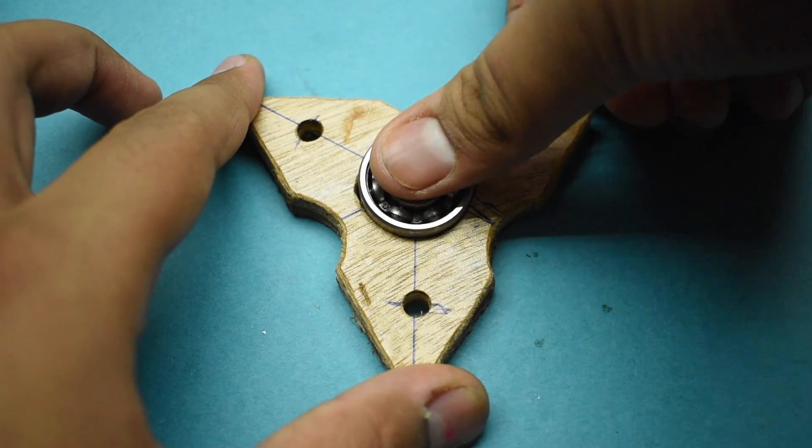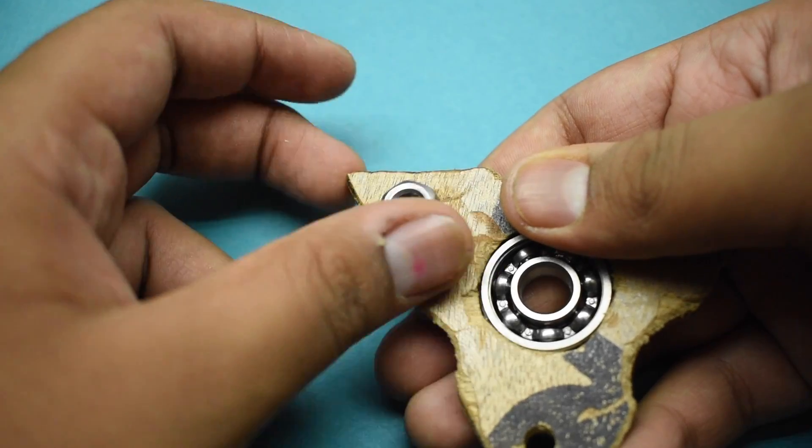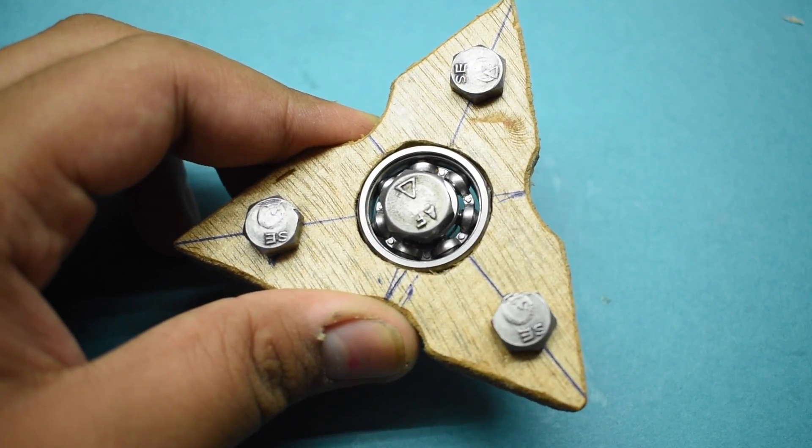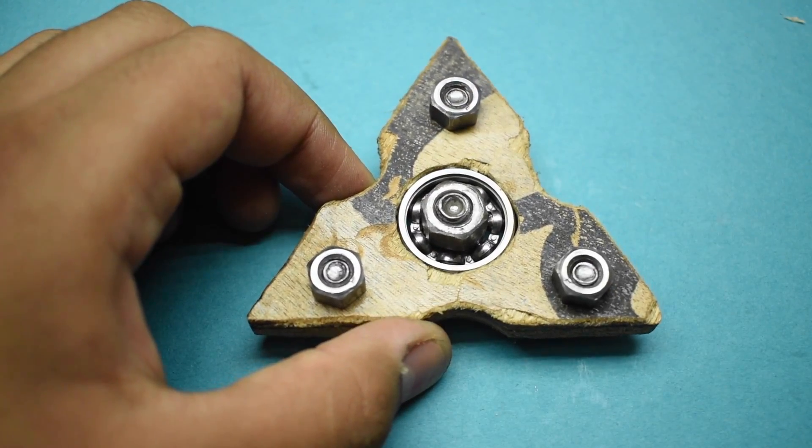After it dries up, place the ball bearing at the center of the triangle and the 5mm nuts on the other 3 holes. Add a 10mm nut at the center of the ball bearing to make the pivot point easier to hold.